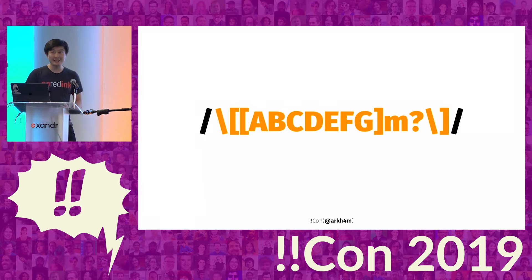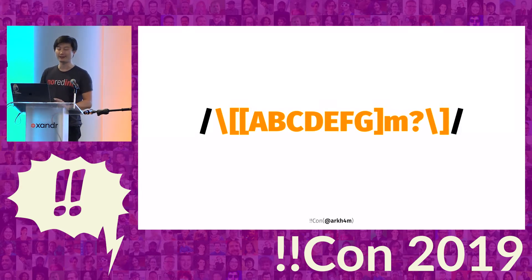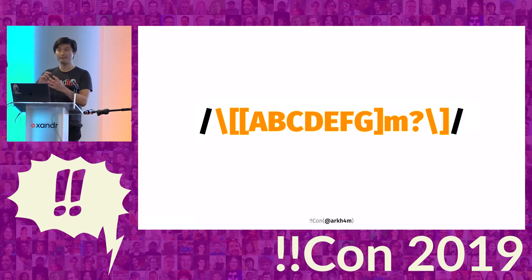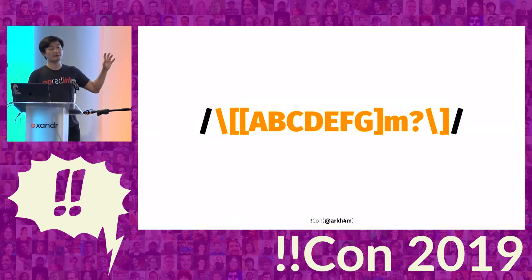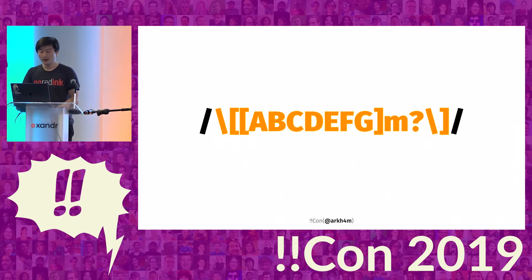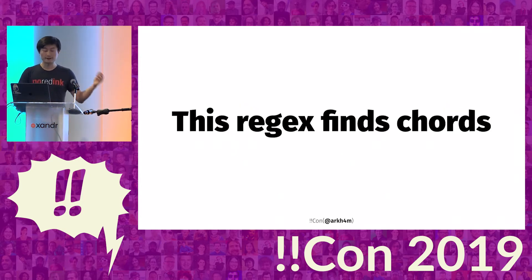If you don't know what a regular expression is, I'm just going to explain how this one works. Those two slashes are just the delimiters — they don't mean anything. What's inside is what's important. A regular expression is a meta-language where each character can either be a real character or a meta-character. Unfortunately, the square bracket is a meta-character, so you can see the first backslash-square character — that means I actually want a literal square bracket. Then I'm saying I want anything between A and G, and then I have this little M, and the question mark says that M is optional — when you're writing a chord, this means I want a minor chord. And this regular expression works very well. It finds chords.